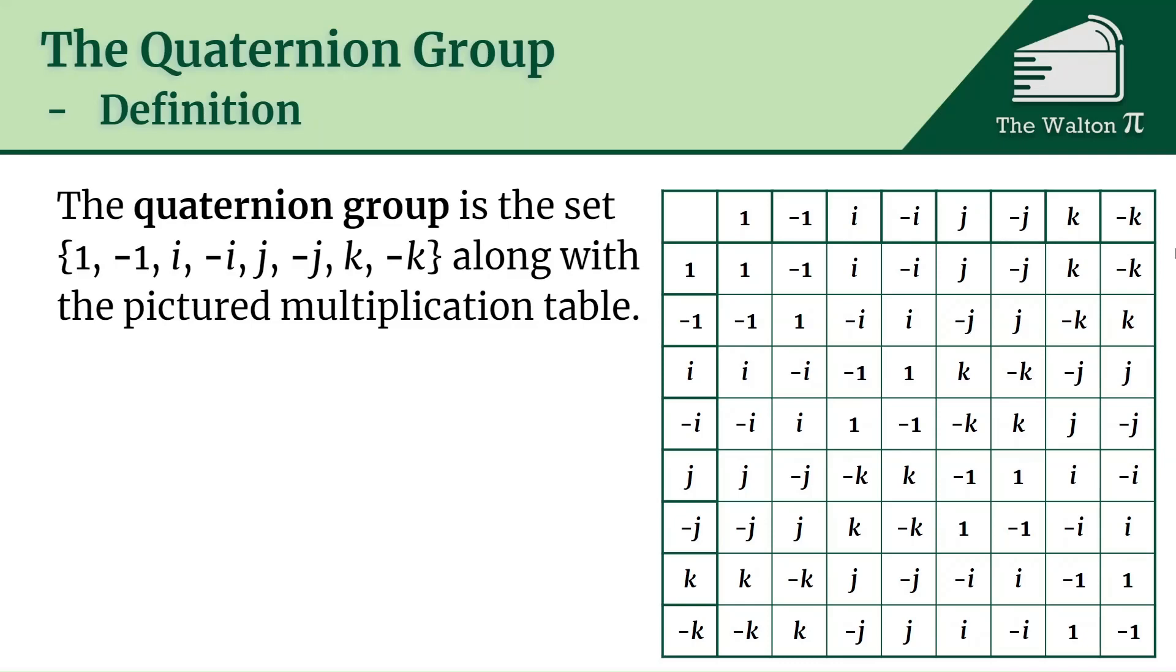So this is a lot of information taken all at once, so let's look at this. This means that i times j equals k, so we look at the row to be our first element, the column is our second element, and we just see what it comes out to be, so i times j gives us k. That also means that k times k is negative 1 and so on.